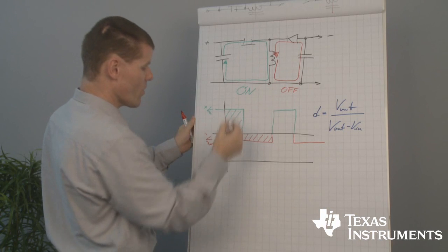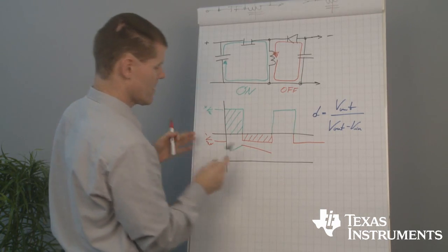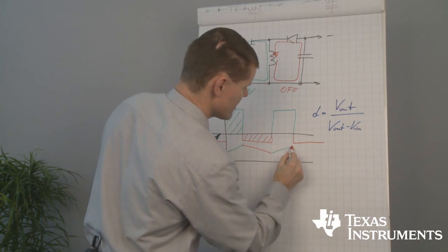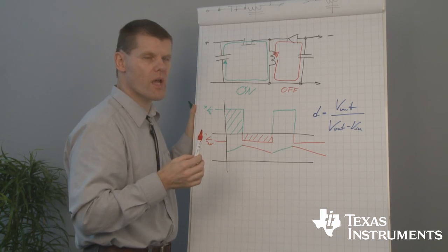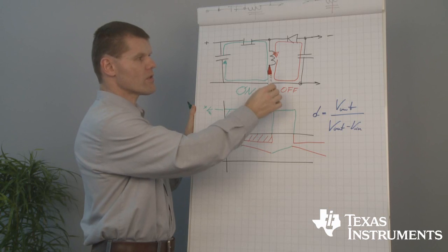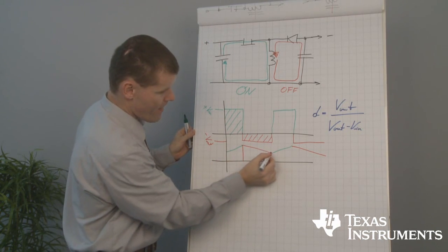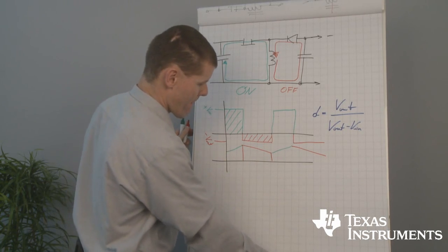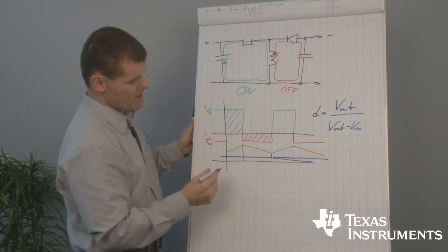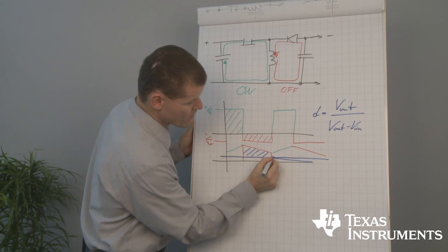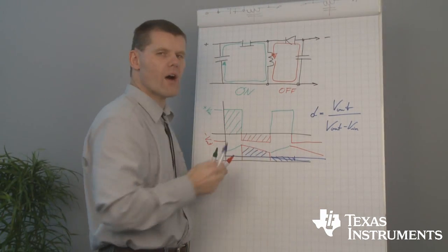Now let's have a look at the current. It's always the same: current increases, current decreases during the on-state; current increases, current decreases during the off-state. Here we have the same behavior as the boost converter — energy is only transferred to the output when the switch is open. That means our average DC current is roughly around here, because this area must fit into this area. That's the basic understanding of our inverter topology.